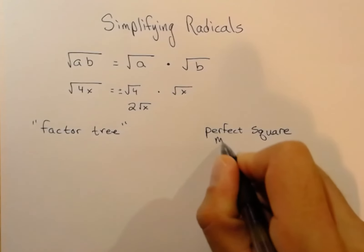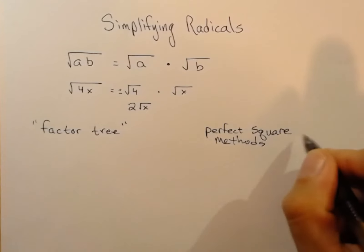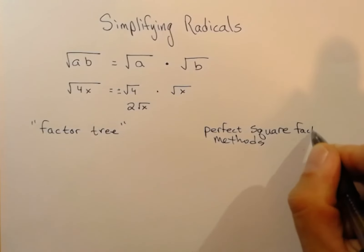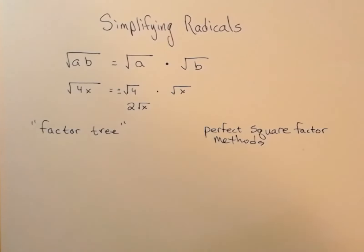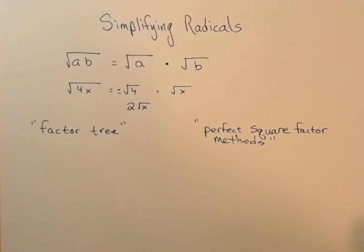And the other is the perfect square factor method. Both methods involve factoring, or breaking a number up into the numbers that multiply into that number.